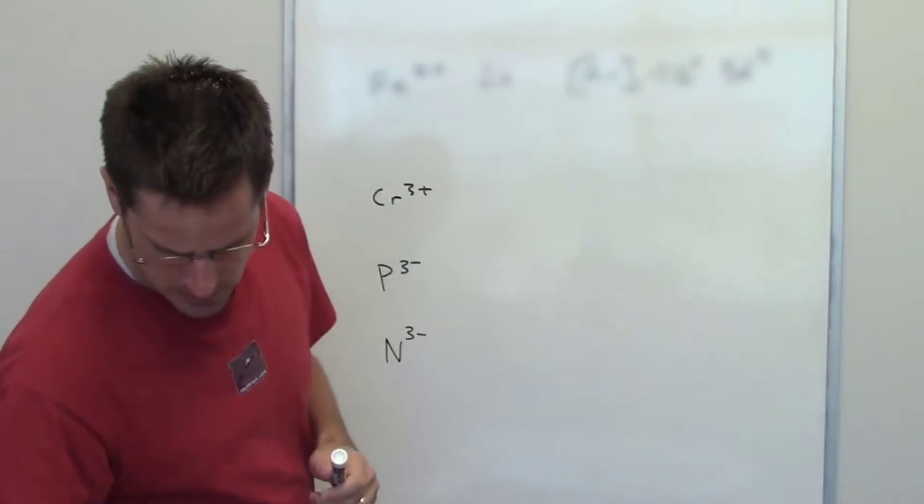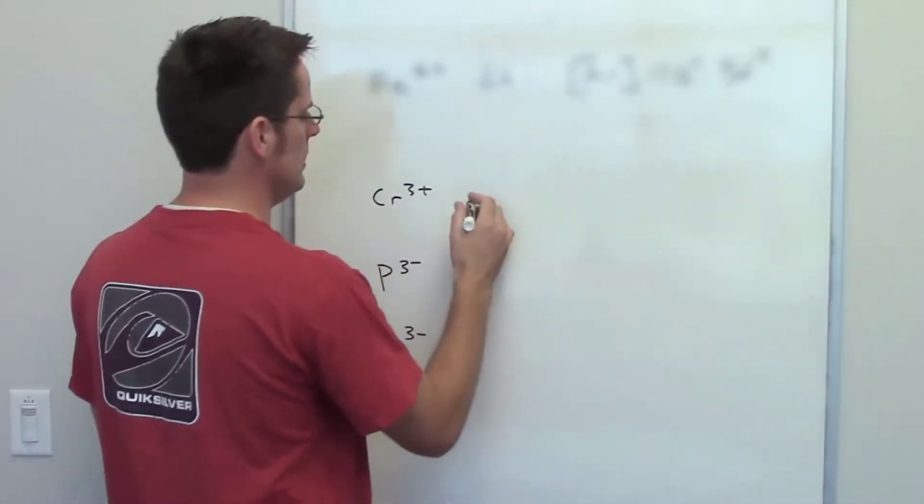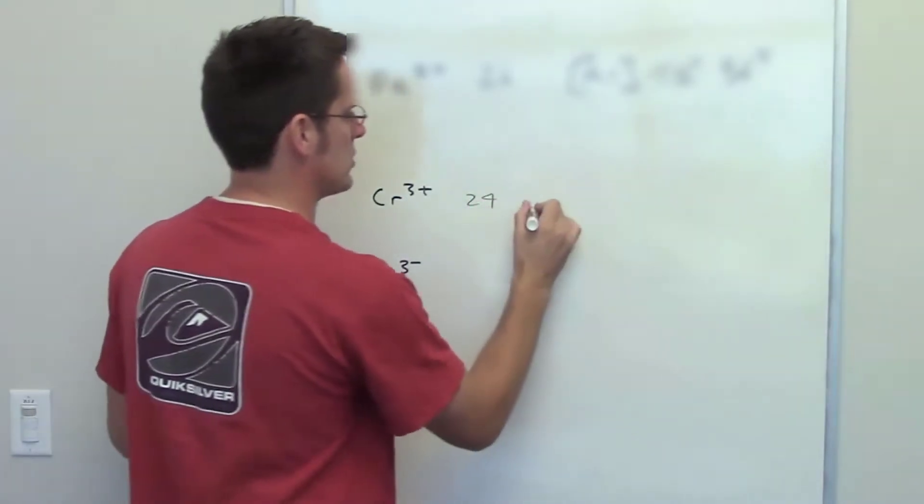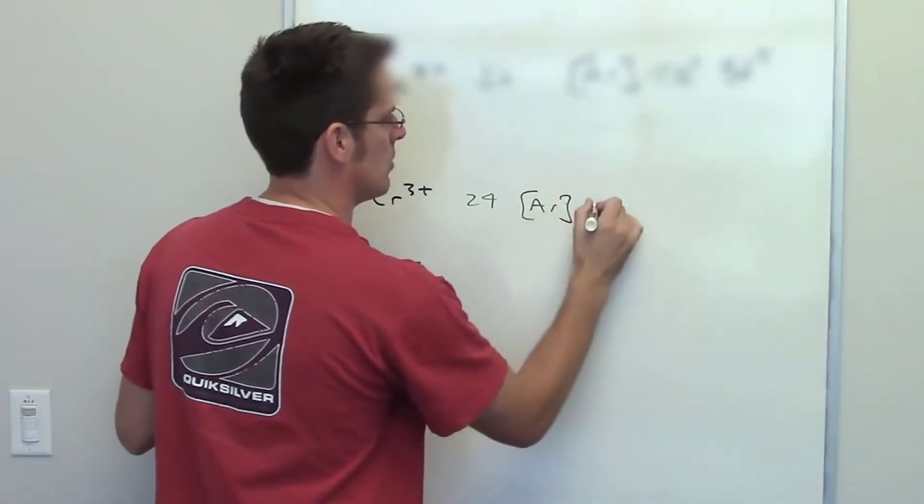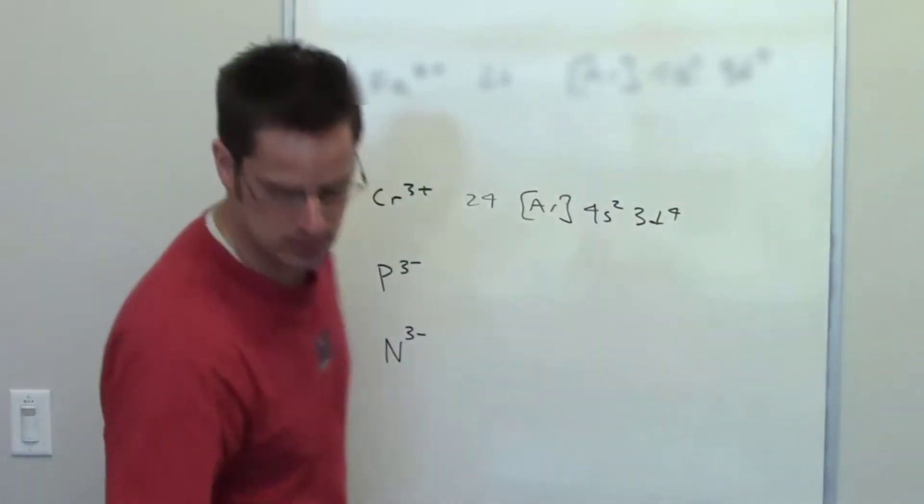Chromium is element 24 on the periodic table, so when it's neutral it has an electron configuration of argon 4s2, 3d4, if I'm looking at that correctly.